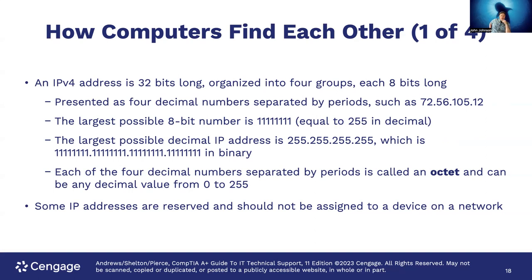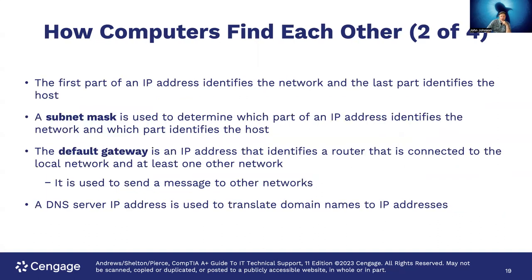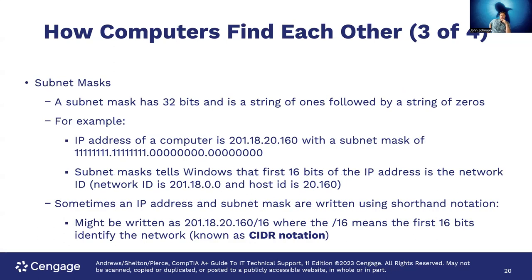Some IP addresses are reserved and should not be assigned to devices — your broadcast address and network identifier take away two IP addresses on every subnet. The first part of an IP address identifies the network; the last part identifies the host. A subnet mask determines which part is which. The default gateway is an IP address identifying a router connected to the local network and at least one other network — used to send messages to other networks. A DNS server IP address translates domain names to IP addresses.